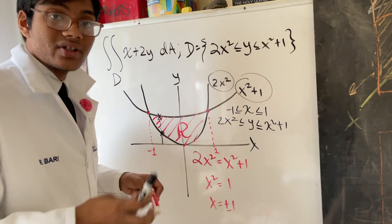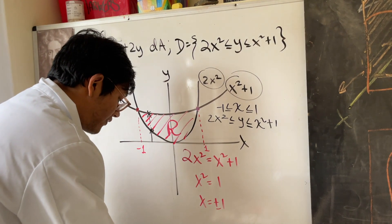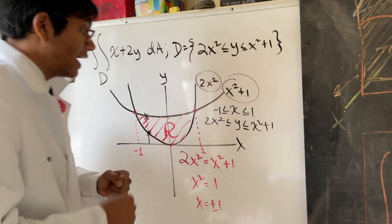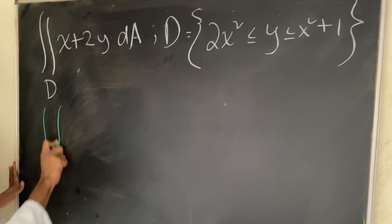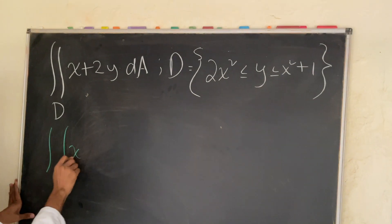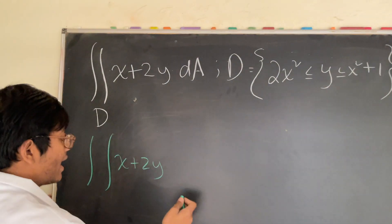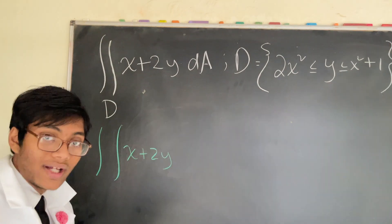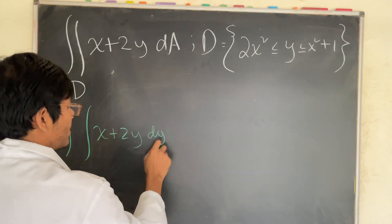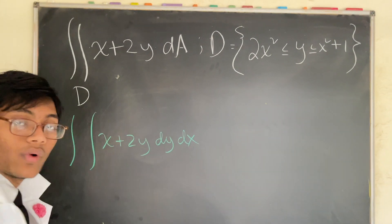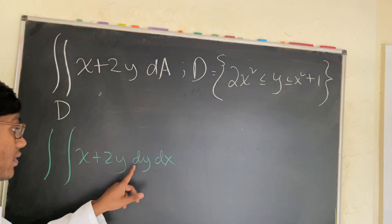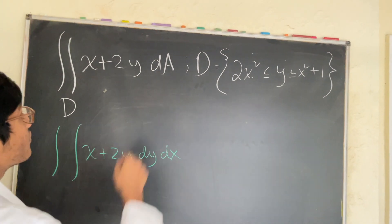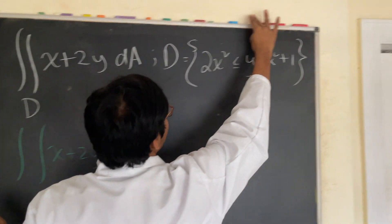Now that we know the limits of integration for both x and y, we can head to the blackboard and start integrating. Let's write down our double integral: x plus 2y, and we'll do dy dx. Because we're doing dy dx, we have to remember the limits of integration for our y variable first.